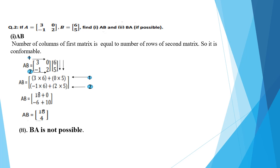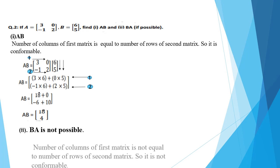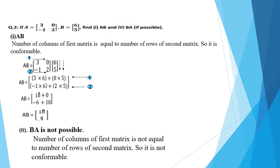Second part: BA. For BA, you have to check the order of B first, then A — the columns of B and rows of matrix A. Matrix B has one column, while matrix A has two rows. The order is not the same; the number of columns of the first matrix is not equal to the number of rows of the second matrix, so it is not conformable for multiplication.